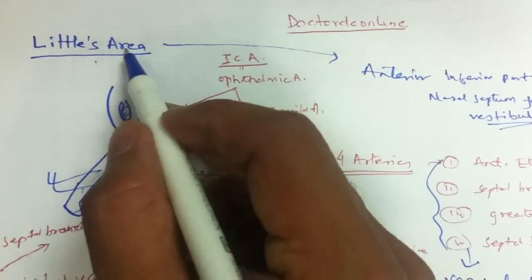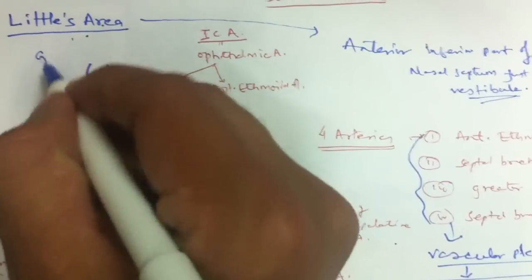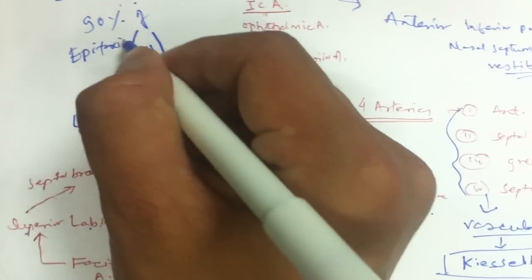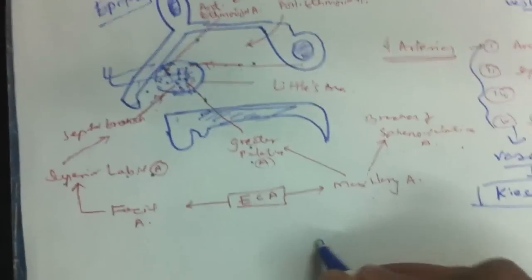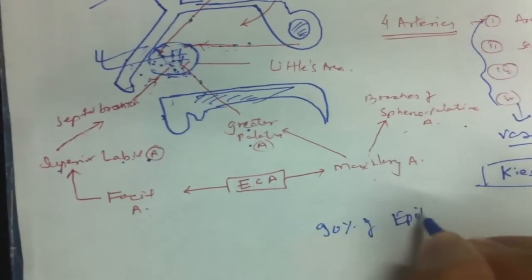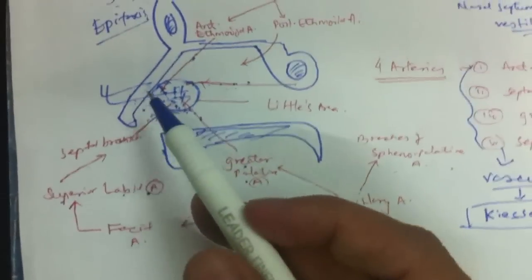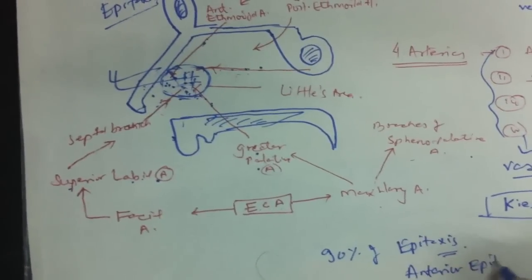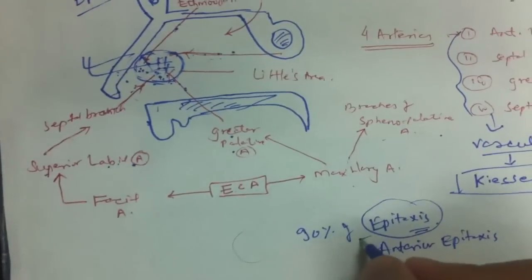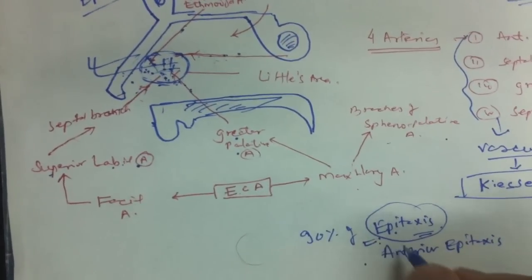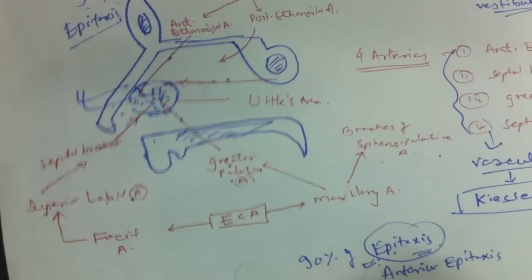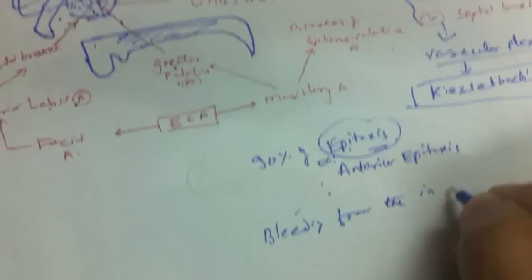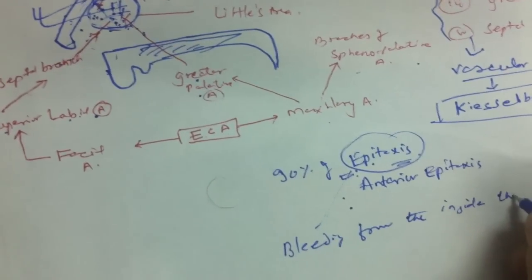The reason we are talking about Little's area and why it is important is because this Little's area is the site where 90 percent of epistaxis occurs. Epistaxis means bleeding from inside the nose, and 90 percent of epistaxis occurs at the site of Little's area, which is also called anterior epistaxis.